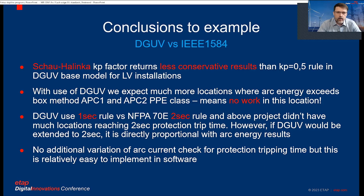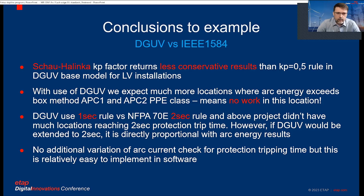Most protective devices will sometimes work much longer than one second — five seconds is the required maximum automatic disconnection time for distribution feeders in low voltage. So limiting to one second is rather optimistic. Also, there is no additional variation for arc flash current — no check for jumping between instantaneous settings and short trip time settings — though it's kind of included via minimum arc variation based on minimum short circuit current.